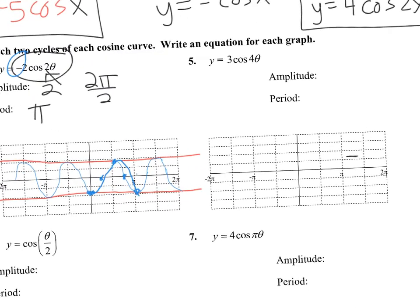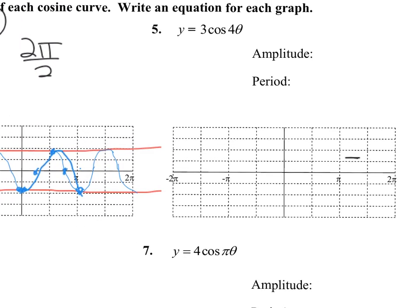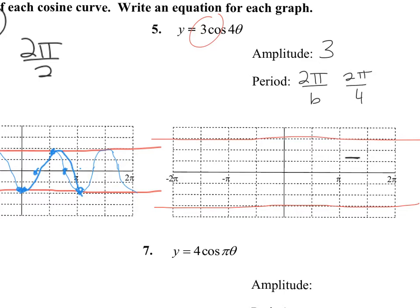This one has amplitude 3, so I go across 3. It's a positive cosine function, so it starts up high at 3. The period is 2π over B, so 2π over 4, which is π/2. That means between 0 and π/2 there's one cycle. Since it's positive, it goes: max, 0, min, 0, max, 0, min, 0, max — and keep going; you can go the other way too.